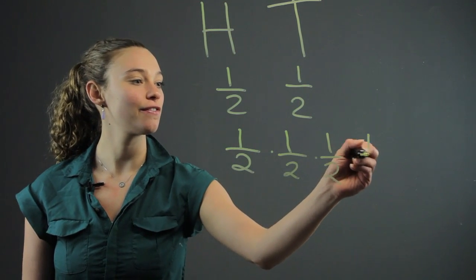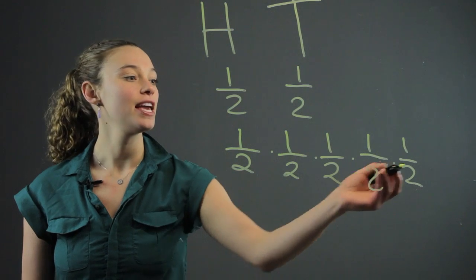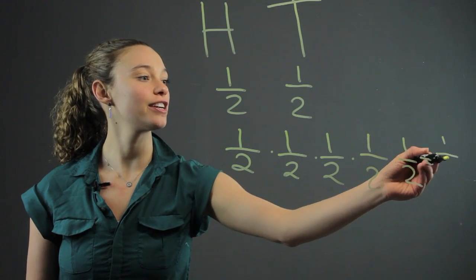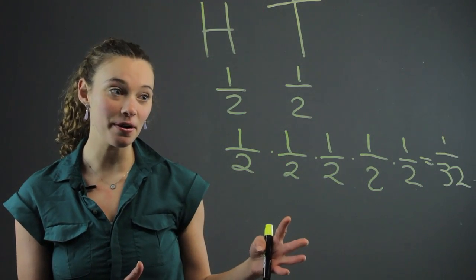One, two, three, four, five, because it's five times each time. And you end up with 1 over 32. And that is the probability that you will get heads five times in a row.